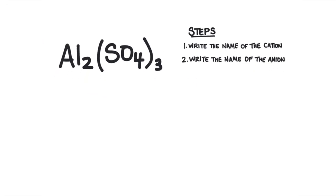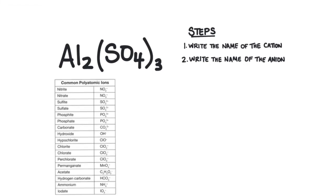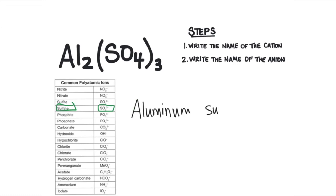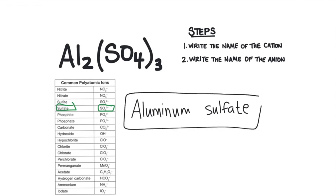Let's look at one more example. We have aluminum and then SO₄. We recognize aluminum from the periodic table, but SO₄ we have to recognize as a polyatomic ion from our list. All of those other numbers are there to balance out the charges of the ions. Finding SO₄ on the list, we see it's SO₄²⁻, called sulfate. So we write the name of the cation — aluminum — and then the name of the anion — sulfate — giving us aluminum sulfate.